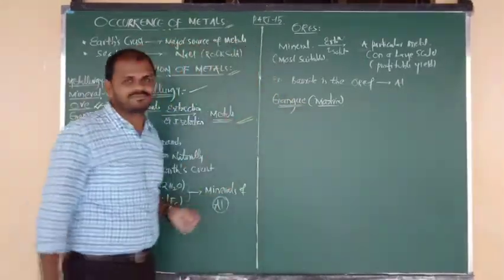The next definition is gangue — spelled G-A-N-G-U-E — also called the matrix. Gangue is a metallurgy term. In our terminology we have to say gangue means impurities. What is meant by impurity in metallurgy? That is gangue.